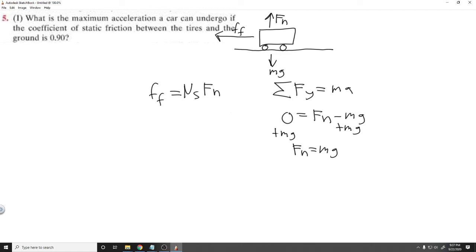And so we can replace this in a second, but let's find out what f sub f is. Same thing, but in the x direction. The sum of the forces in the x direction is going to be equal to ma. But notice the only force we have in the x direction is this friction force. So f sub f is equal to ma.